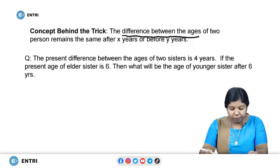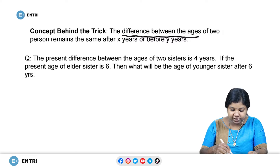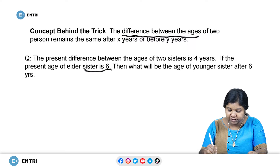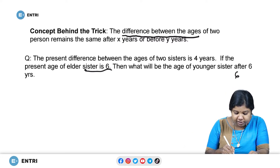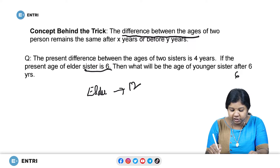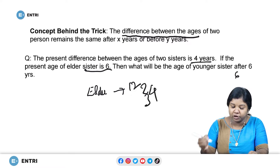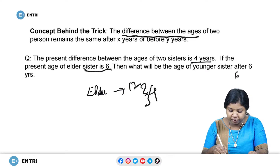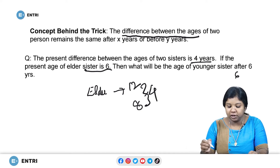Let us explain this concept with the help of an example. The present difference between the ages of two sisters is four years. If the present age of the elder sister is six years, then what will be the age of the younger sister after six years? After six years, the elder sister's age will be 12. It is already given that the difference between the ages of two sisters is four years. So the difference will always be four years, meaning the younger sister will be four years younger than the elder sister, which will be eight. So the age of the younger sister will be eight years after six years from the present.